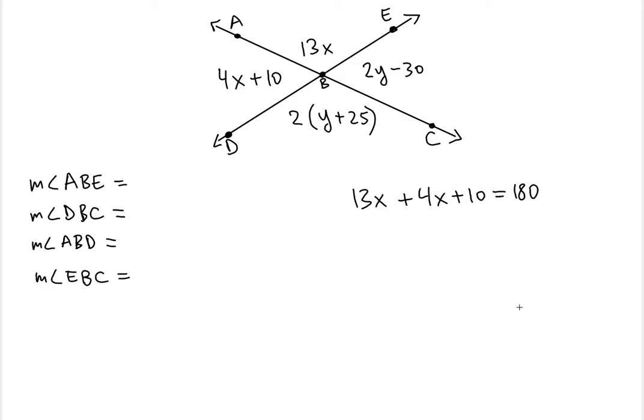So if this is equal to 180 degrees, we can easily solve for x. We can combine like terms, which are these two. We get 17x plus 10 is equal to 180 degrees. So if you subtract 10 on both sides, you should get something like 17x is equal to 170. Then divide both sides by 17, you should get the value of x equals 10.